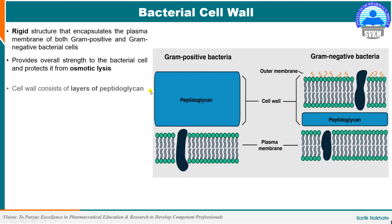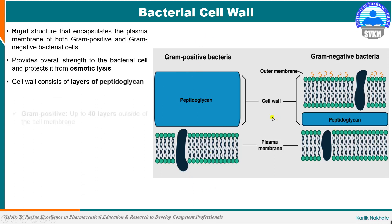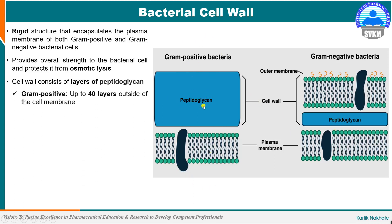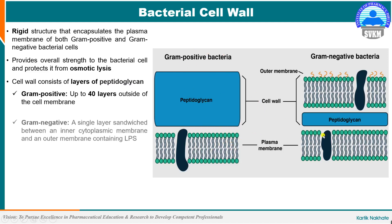Structurally, the cell wall is made up of layers of peptidoglycan. While gram positive bacteria may have up to 40 layers of peptidoglycan outside of the cell membrane, in gram negative bacteria only a single layer of peptidoglycan is sandwiched between the inner cytoplasmic membrane and the outer membrane containing lipopolysaccharides.